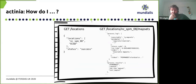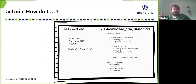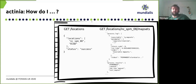The next slide is more practical — it shows how you interact with Actinia. You send a request like HTTP to your Actinia URL slash locations, and you receive back a JSON file listing the locations. Here you can see two locations: NC_SPM_08 and ECAD. You always get back the status of your request. You can go deeper: add the location name to your request, then add 'mapsets', and you get back a JSON file listing the mapsets within that location.